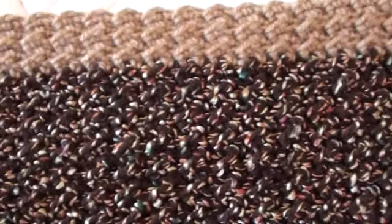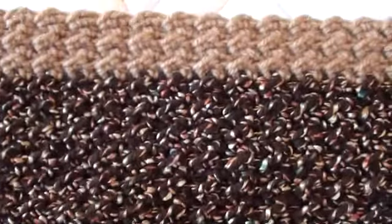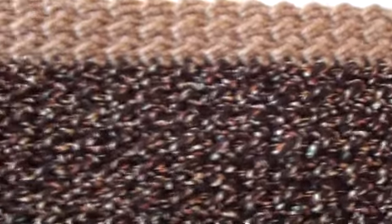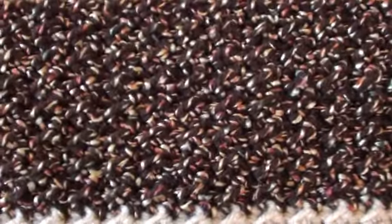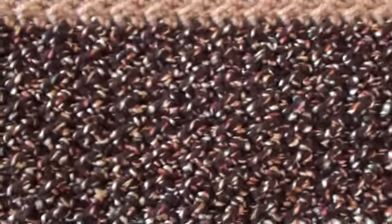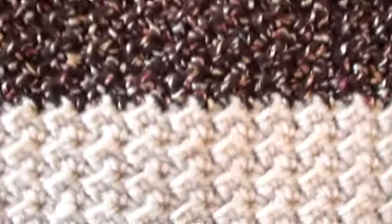And then you'll do a half double crochet into a slip stitch, and then you basically repeat that sequence. And then you're doing a slip stitch and then a half double crochet, slip stitch, half double crochet.